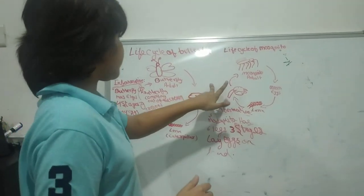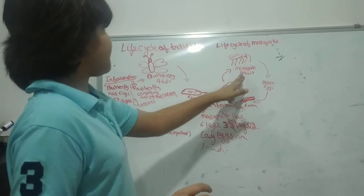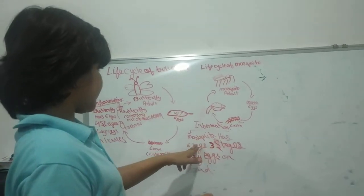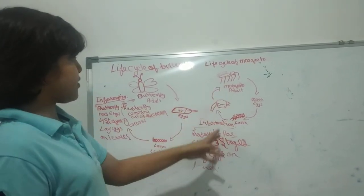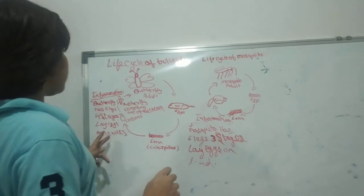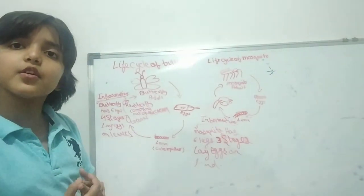If we want to differentiate, the same thing is that the butterfly has six legs and mosquito also has six legs. The butterfly has four stages and the mosquito has three stages. When we say three stages, that means three stages in its life cycle.